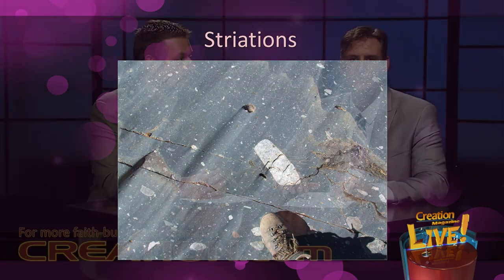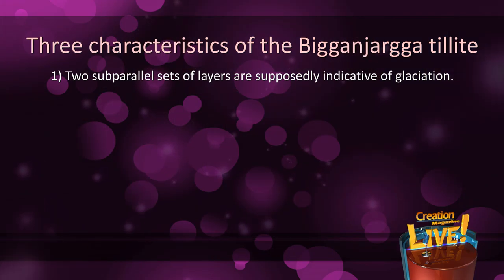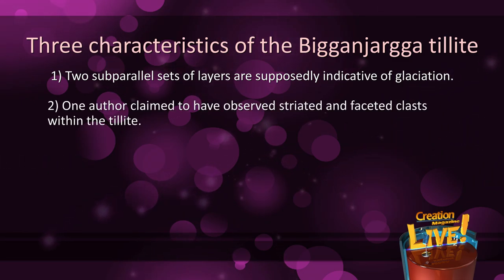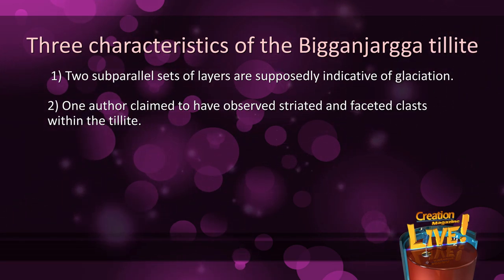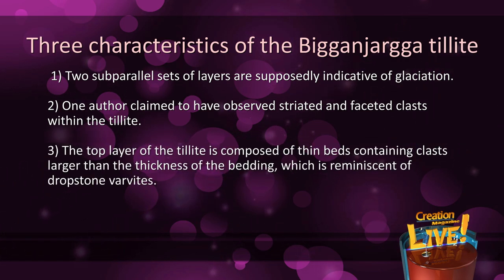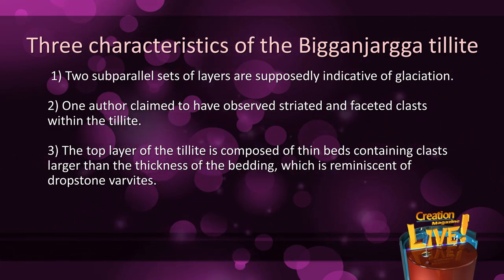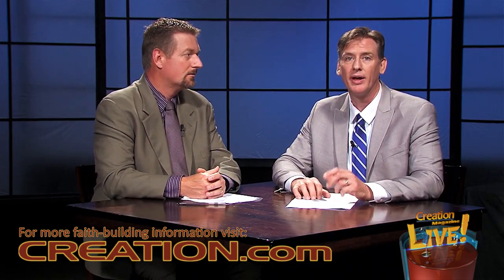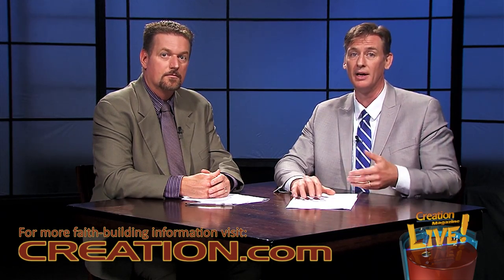Three specific features identified this as a supposed tillite. First, two sub-parallel sets of layers are supposedly indicative of glaciation. Second, one author claimed to have observed striated and faceted clasps within the tillite. Third, the top layer of the tillite is composed of thin beds containing clasps larger than the thickness of the bedding, which is reminiscent of dropstone varvites — dropstones being isolated fragments of rock found within finer-grained, water-deposited sedimentary rocks, ranging in size from small pebbles to boulders. These three characteristics of the Biggenjarga tillite are the main diagnostic features for an ancient ice age, and so most geologists accepted without question that the tillite was a remnant of the late pre-Cambrian ice age.